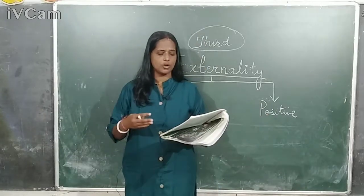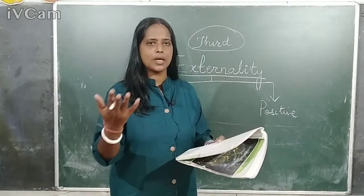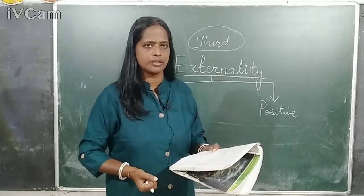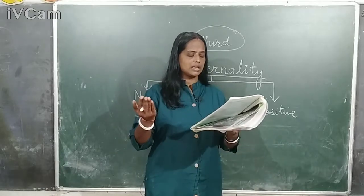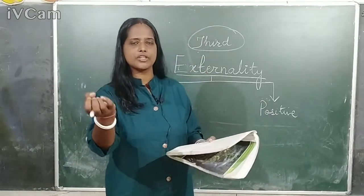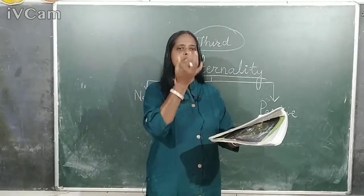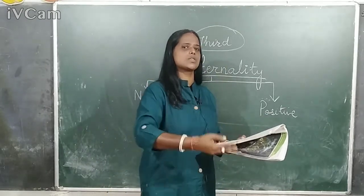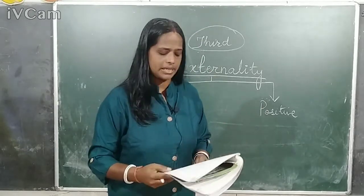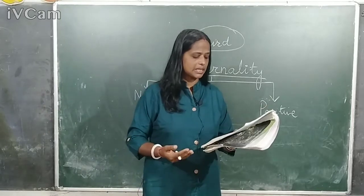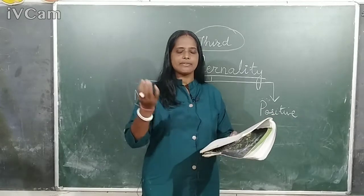The third example of negative externality mentioned in the book: there are two companies harvesting fish. Fish is a common property for all. If one company harvests too much, there are fewer fish for the other — which is again a negative effect on the other party.